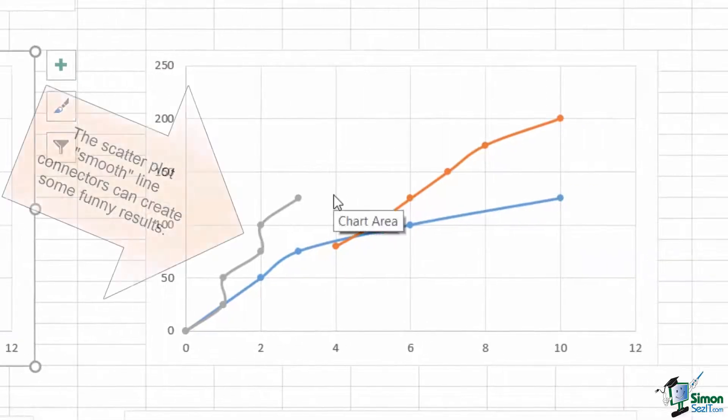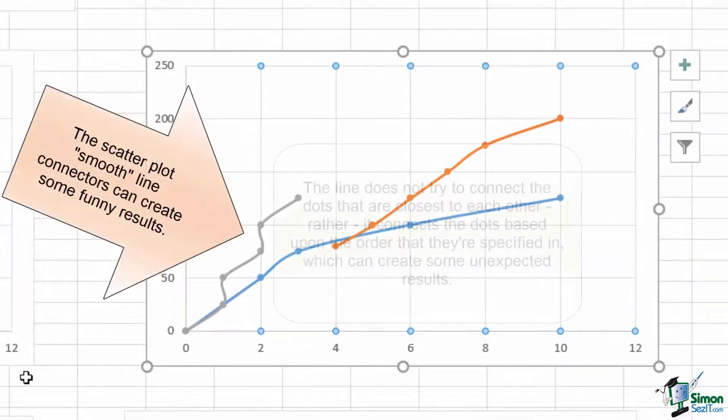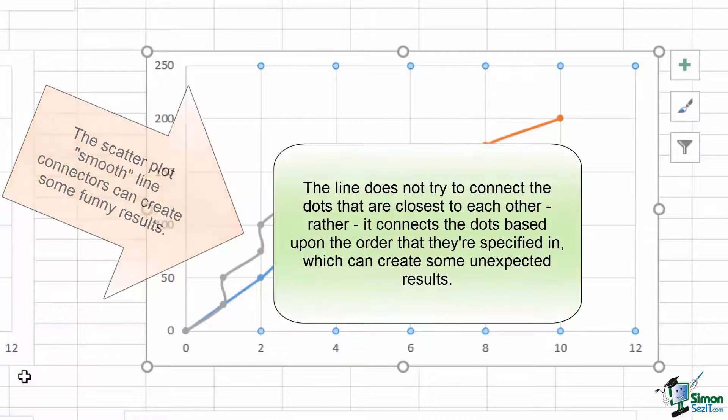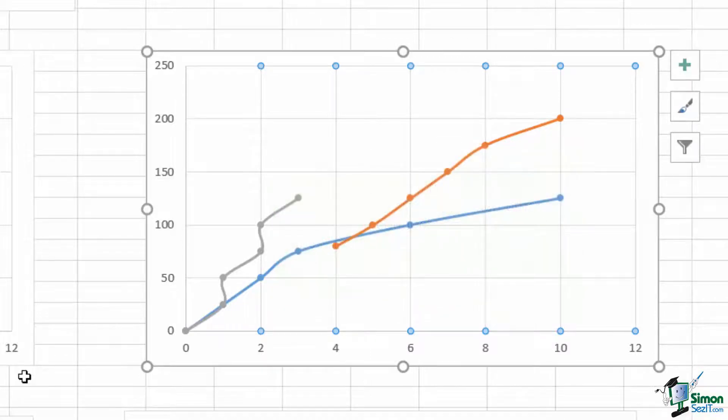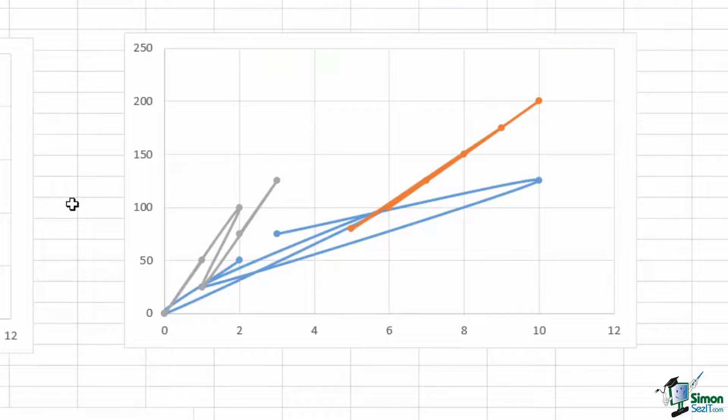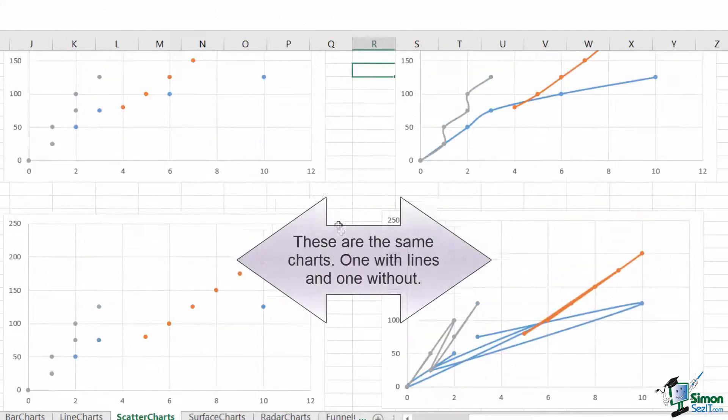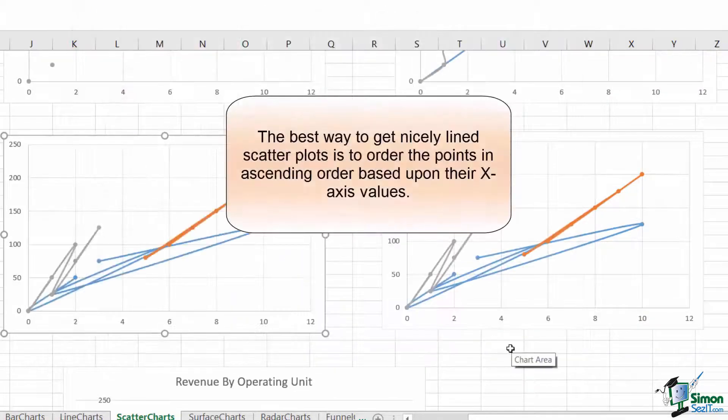Adding the line component makes it somewhat more useful, but scatter plots with lines come with a danger whereby introducing the line dictates that the order of the data points now matters. This set of data points has been ordered by employee count, but what if they're jumbled out of order? The scatter form of our plot looks unchanged. There's no discernible difference from before. But once I add the line, suddenly our chart becomes completely unreadable.